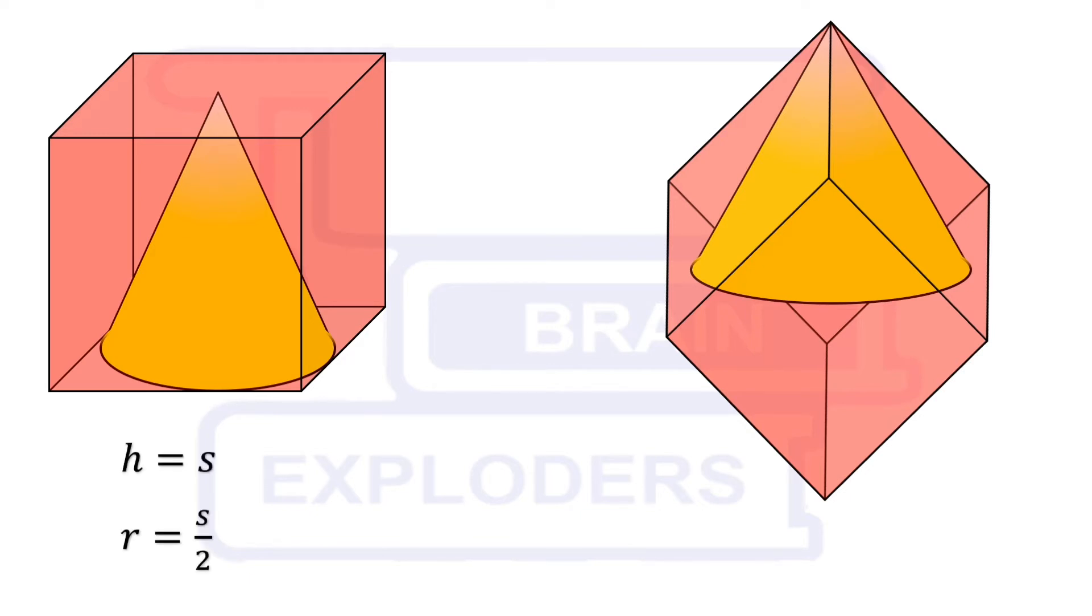In the first one, height of the cone is equal to s and radius of cone is s by 2.